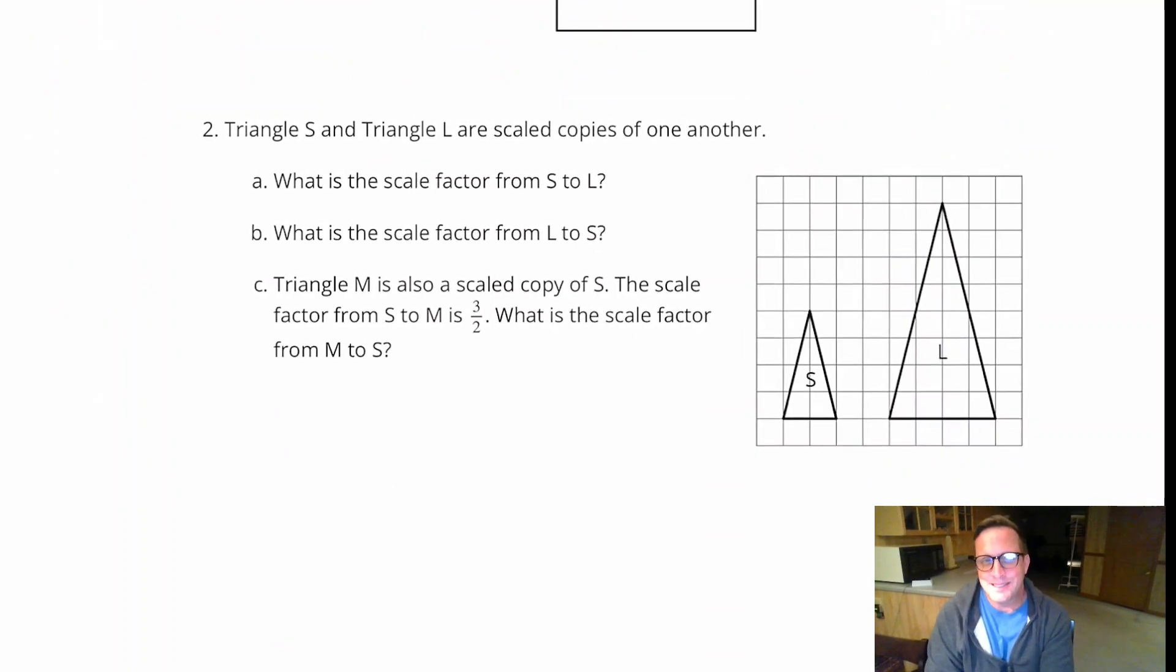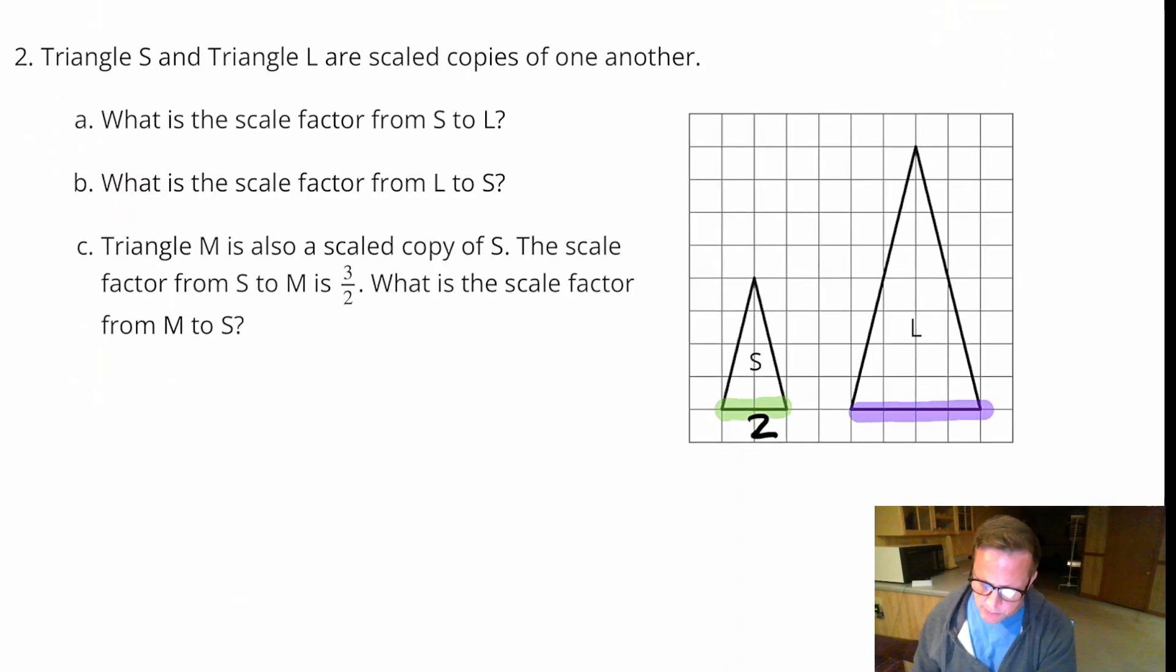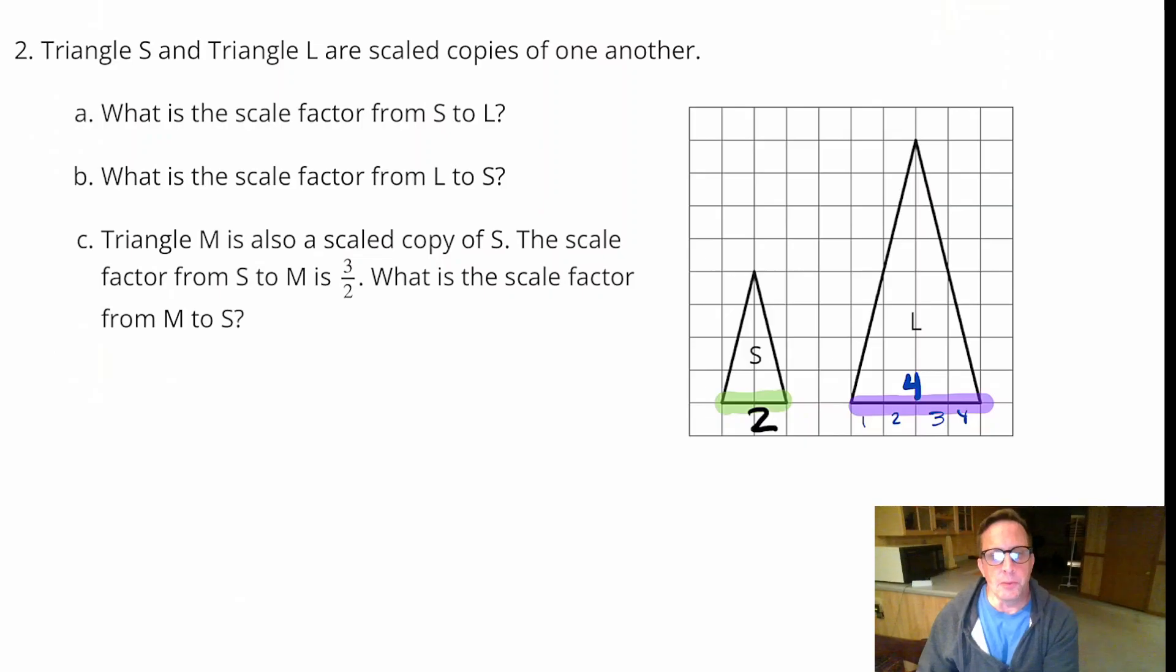For number 2, it says triangles S and triangle L are scaled copies of one another. Question A: What is the scale factor from S to L? I'm going to look at this bottom part right here. That is 2. And then the corresponding part for that is right here, that's 1, 2, 3, 4. So what's the scale factor from S to L? Well, from S to L it got bigger, so it's going to be greater than 1. So scale factor equals 2. It doubled, because 2 times 2 is 4. What is the scale factor the other way? It's not 2. It's going to be 1 half.